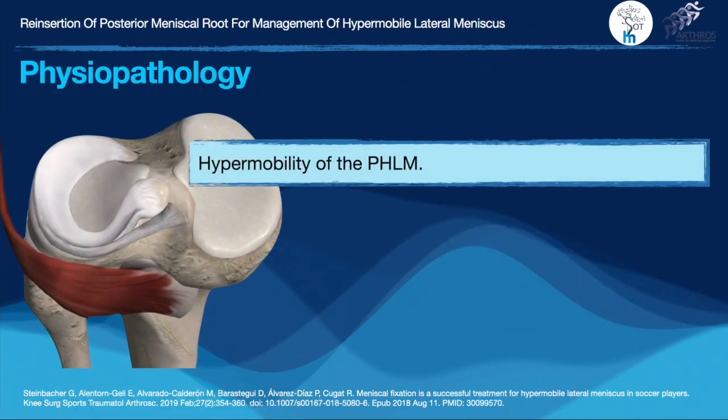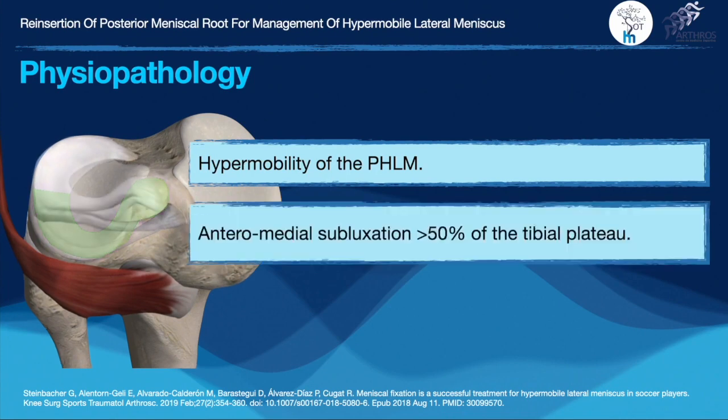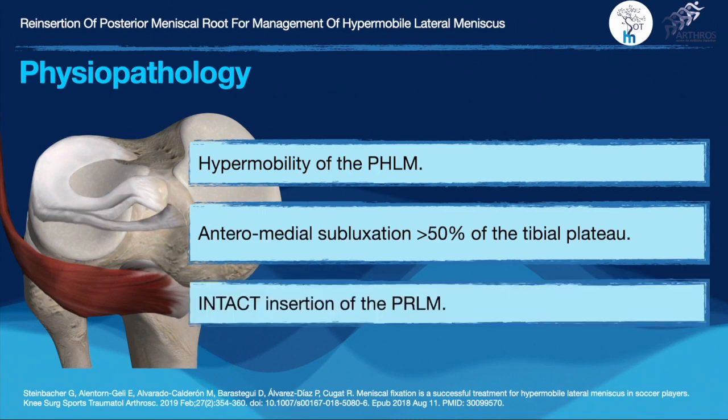There is a hypermobility of the posterior horn which causes anterior medial subluxation of more than 50% of the tibial plateau while keeping intact the posterior root insertion.